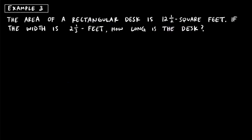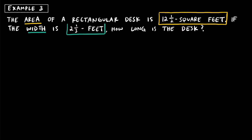Here's a third example. The area of a rectangular desk is 12 and a half square feet. If the width is 2 and one third feet, how long is the desk? Let's start by identifying the information: the area is 12 and a half square feet, and the width is 2 and a third feet. The question is asking for the length. Whenever we have a problem dealing with geometry, I like to draw a picture to visualize what's going on.